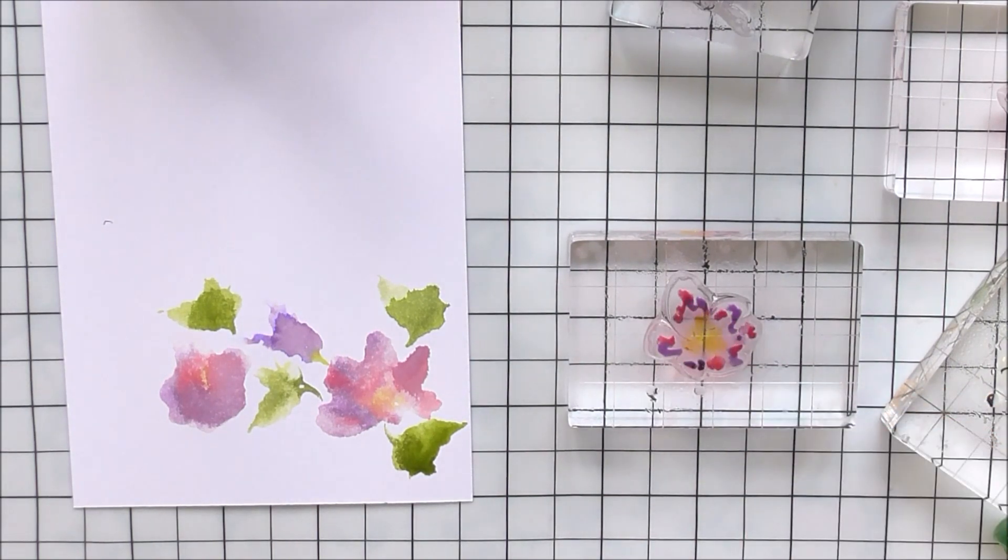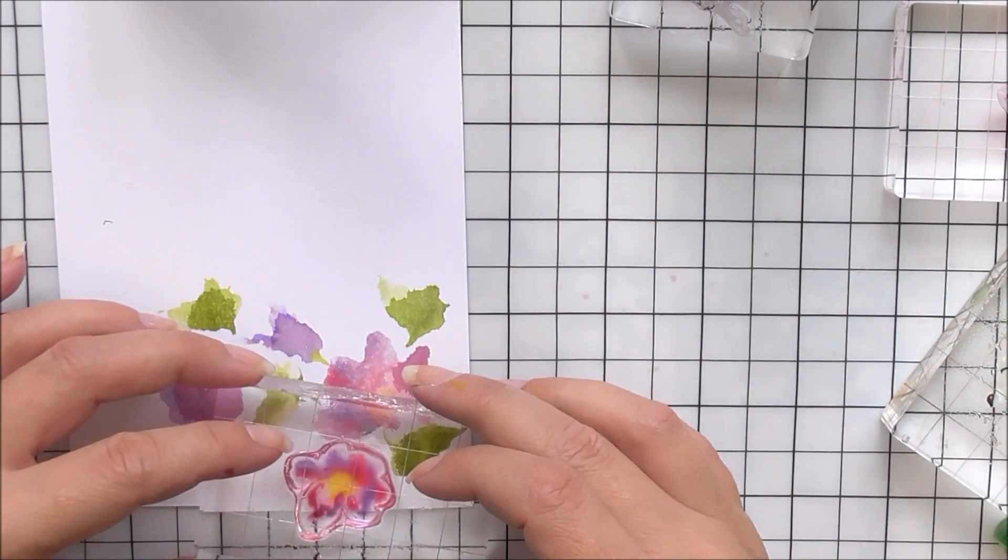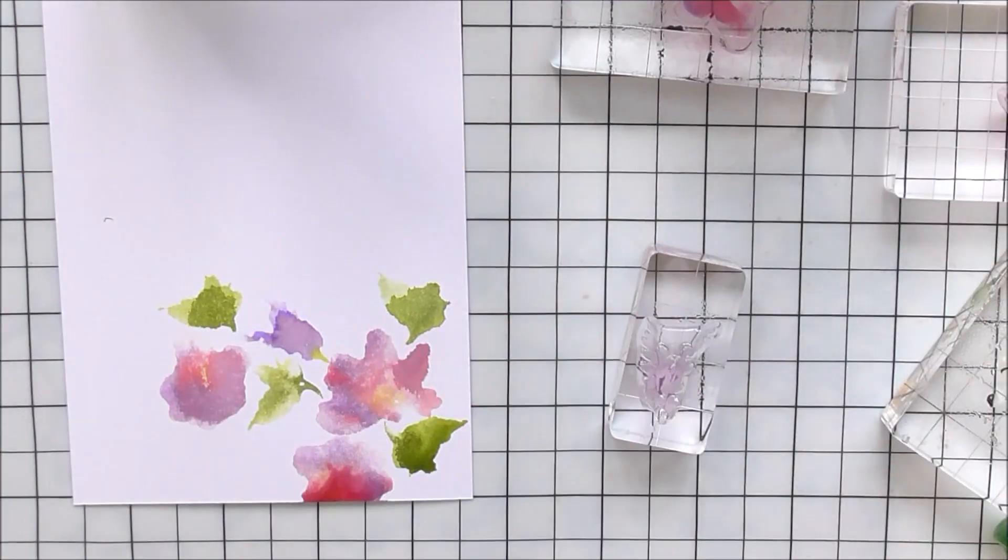For the flowers again, I'm using that Warm Sunshine for the center and little dips and drops of the beautiful Rubelite and the midnight violet.